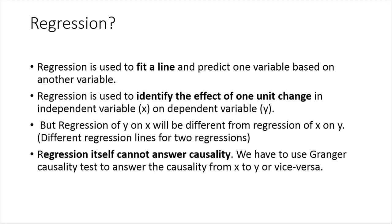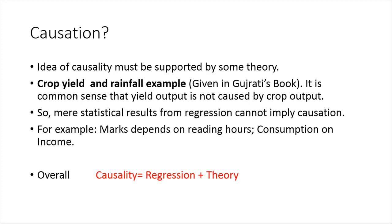Regression is fitting a line, but causality is something different — it is also regression but supported by a theory. As mentioned in the book of Damodar Gujarati, causality should be supported by some theory. You cannot directly say that because we have a regression and the coefficients are significant, Y is affected by X. No, that is not okay.